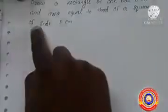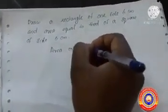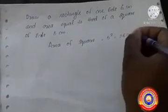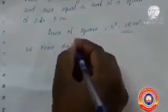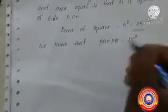Is it clear for you, children? Next question: draw a rectangle with one side six centimeter and area equal to that of a square of side five centimeter. Here we have to draw a square having the same area as that of the rectangle, with one side equal to five centimeter. So area of the square equals five squared, which is equal to 25 centimeter square. We know that PA into PB equals PC squared. Using this principle we have to construct that square.